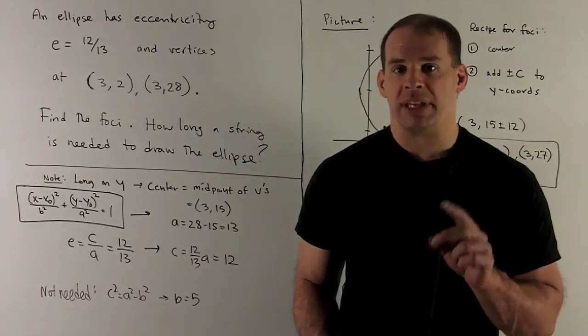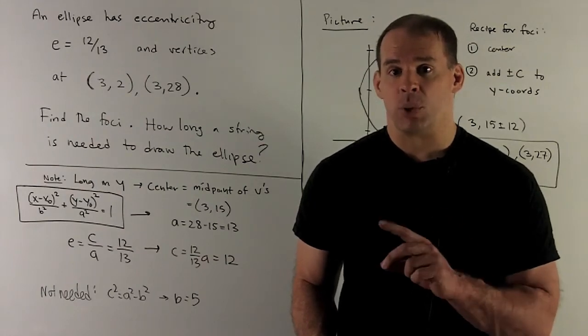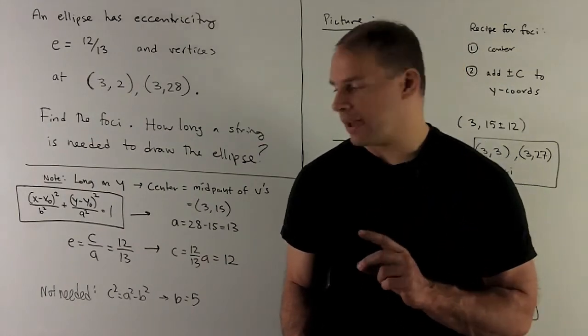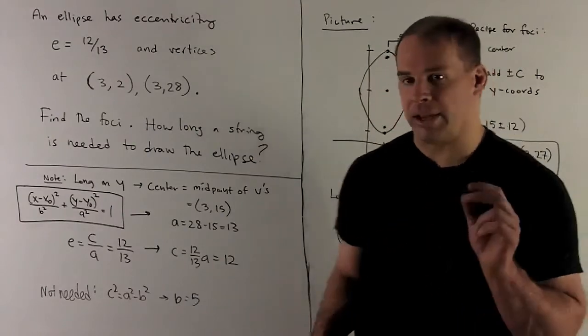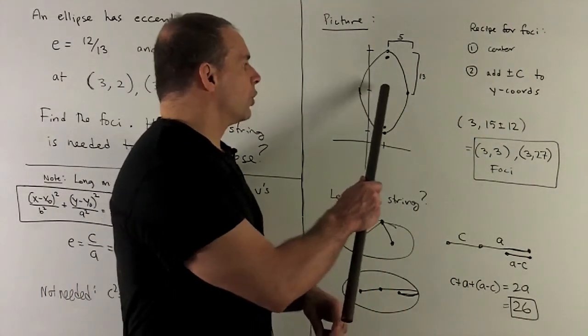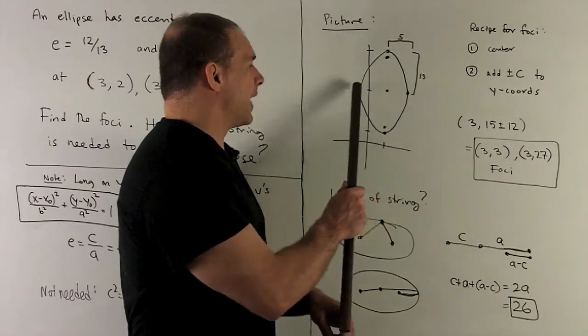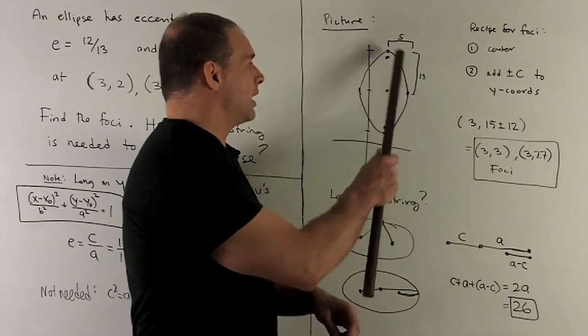So if I want to find b², I take a², subtract off c². That gives me 25, or b equal to 5. We're not going to need that, but let's draw the picture. So that says, go 5 to the left and to the right of your center, that'll give you points on the ellipse, and then we can connect the dots.